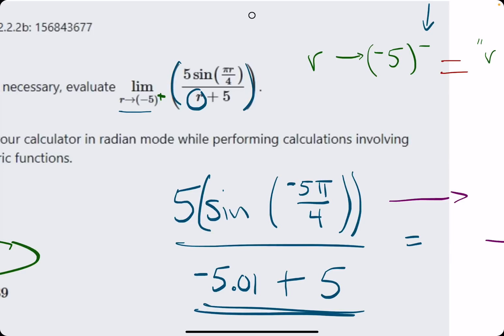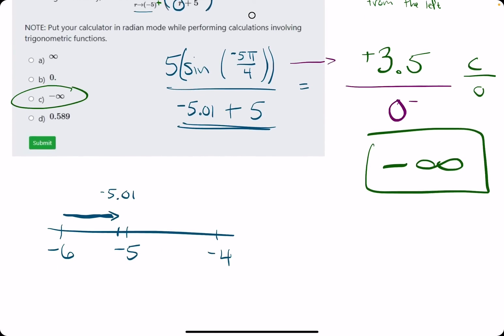The only difference if we were approaching from the right - we would plug in a value from the right, like negative 4.99. If we plugged in negative 4.99, this becomes very close to 0 but now it's positive, like 0.01. That would make both numerator and denominator positive, changing it to positive infinity.